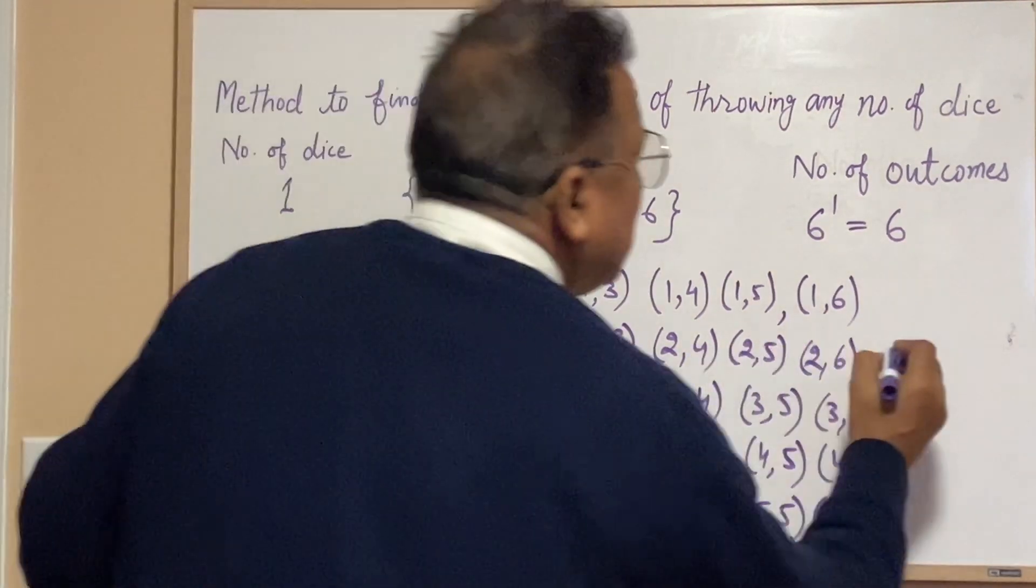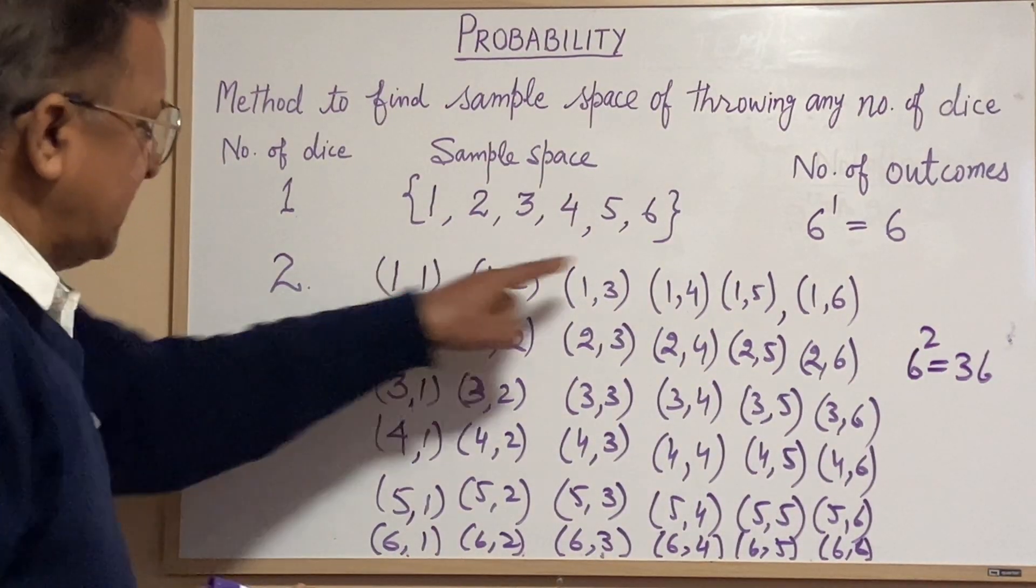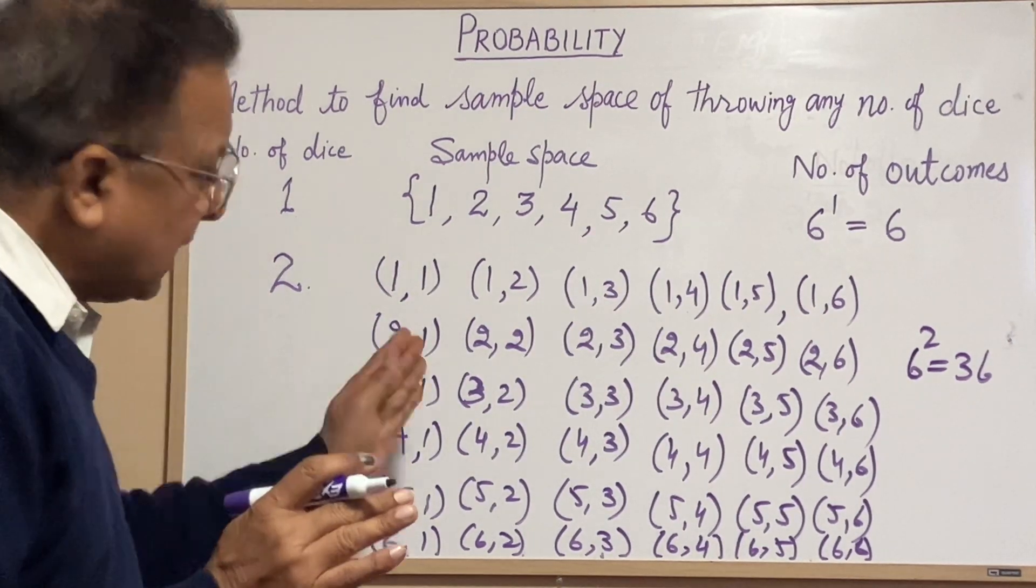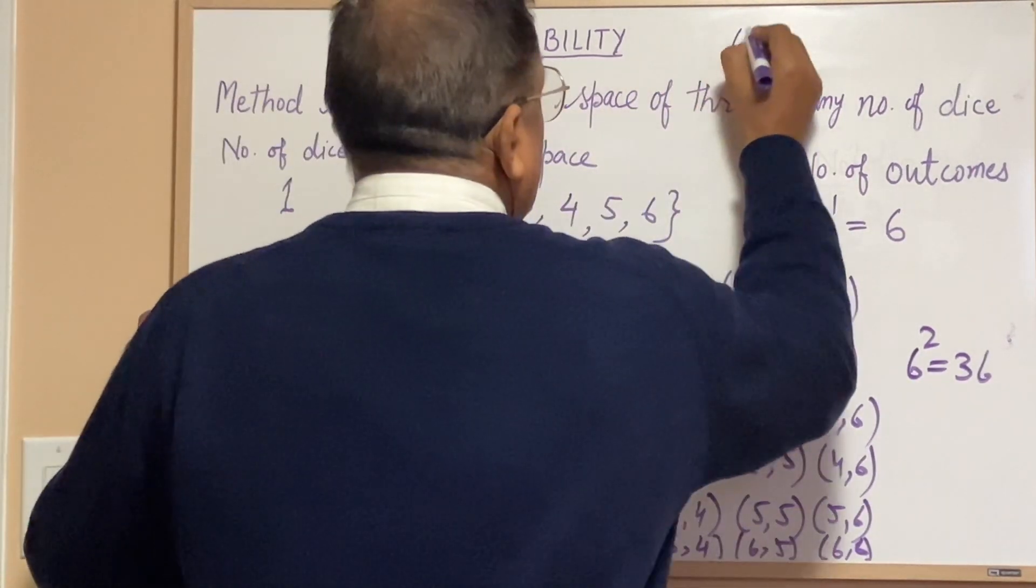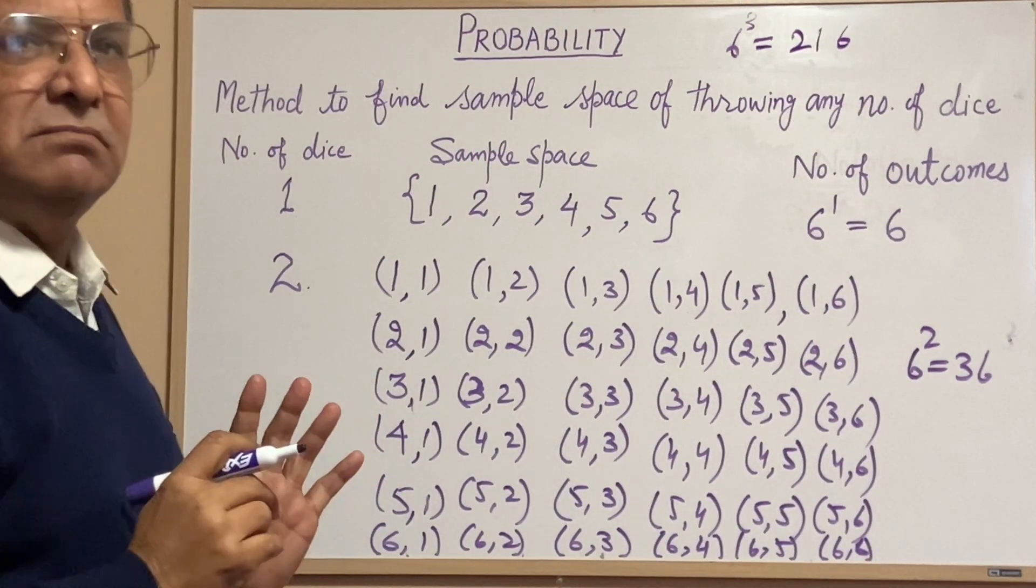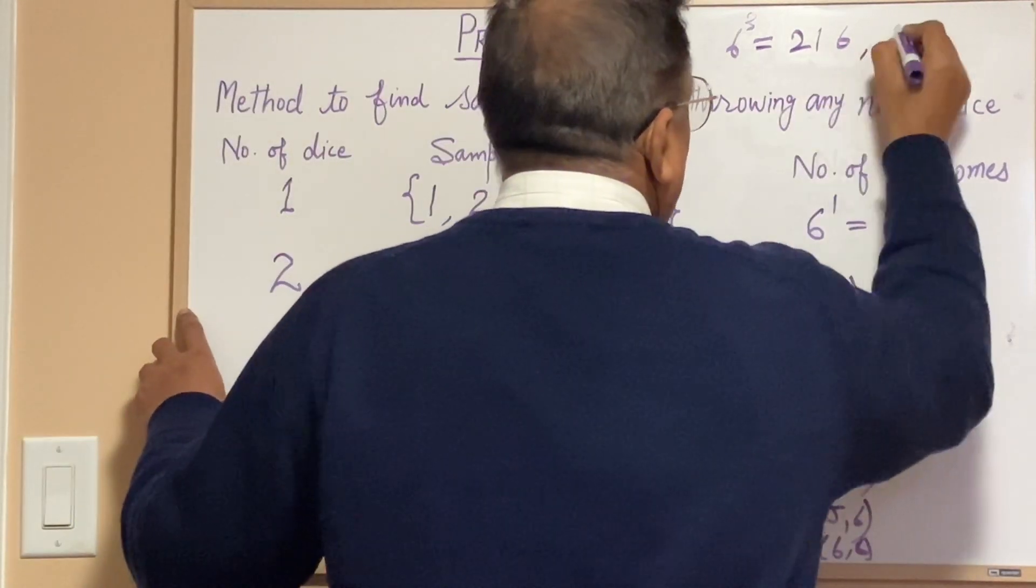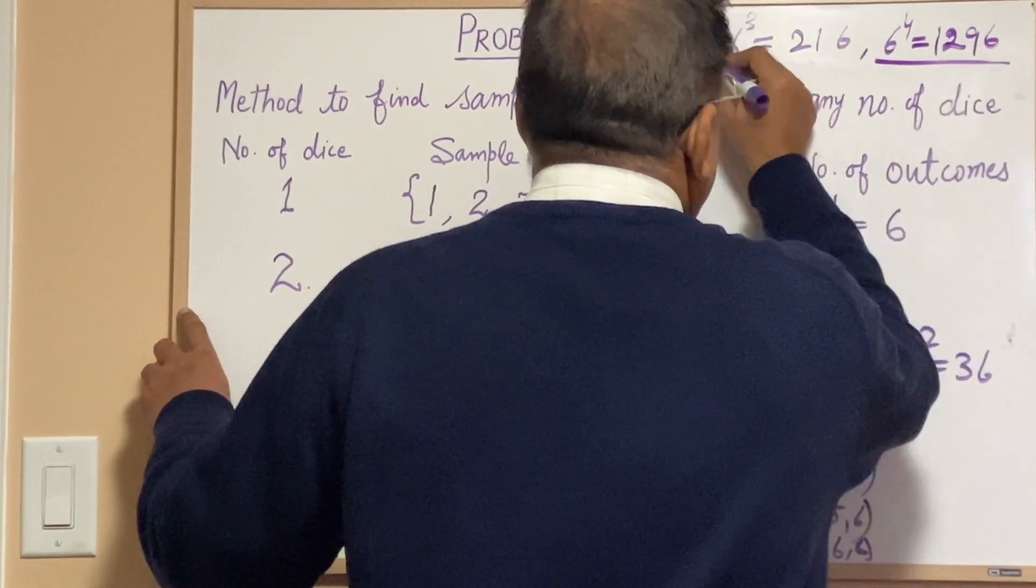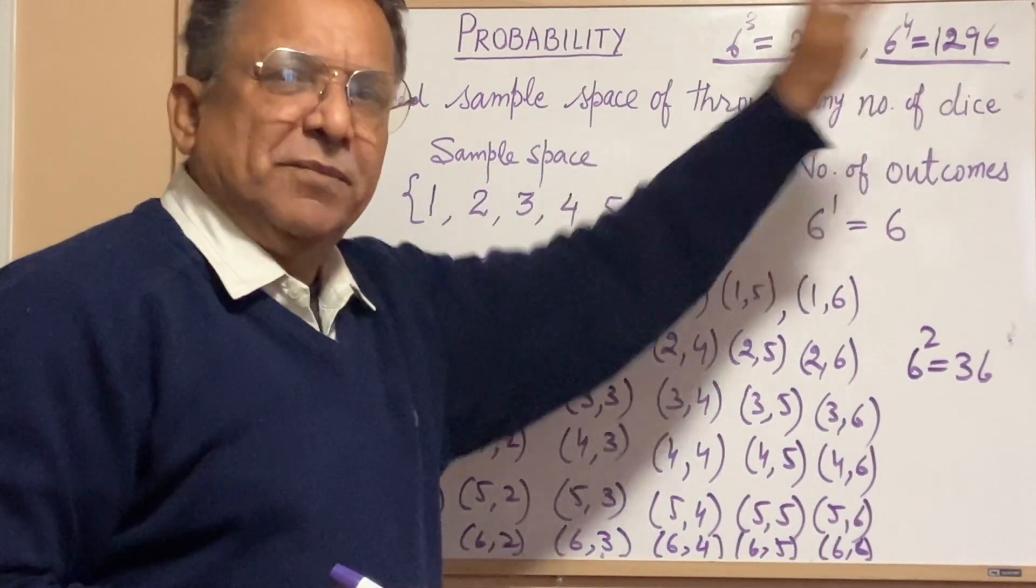What are the number of outcomes? Six raised to power two equals thirty-six. Six multiply six equals thirty-six. If there are three cases, then six raised to power three equals two hundred sixteen cases. If there are four trials, one thousand two hundred ninety-six. If we take n trials, then six raised to power n.